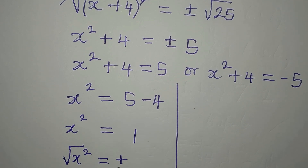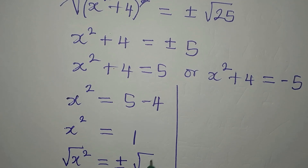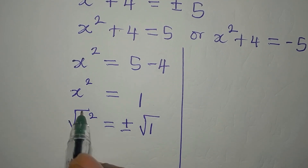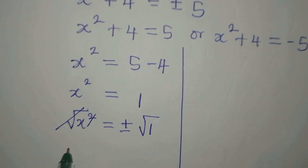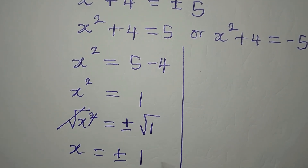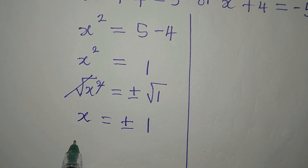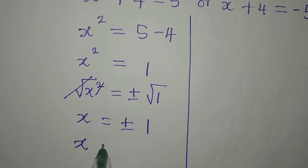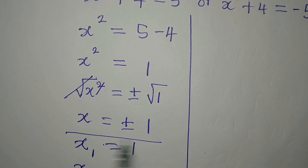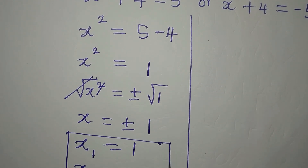It's always plus or minus, so we take plus or minus the square root of 1 on the other side. This removes the square, and x = ±√1 = ±1. So x₁ = 1 and x₂ = -1.